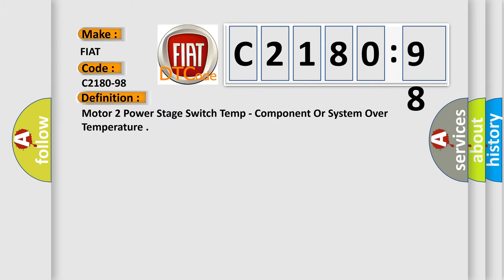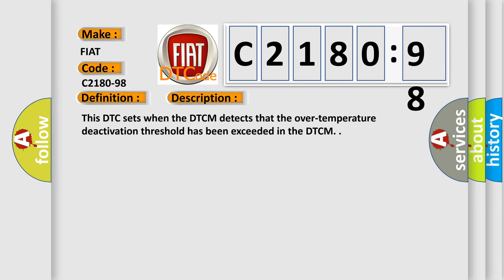The basic definition is: motor to power stage switch temp, component or system over temperature. And now this is a short description of this DTC code. This DTC sets when the DTCM detects that the over temperature deactivation threshold has been exceeded in the DTCM.